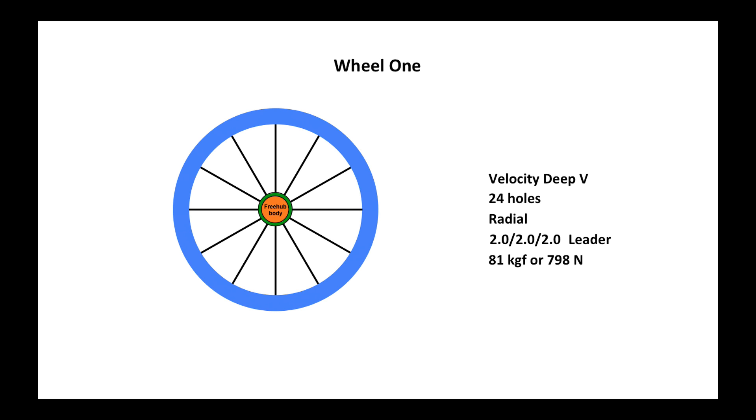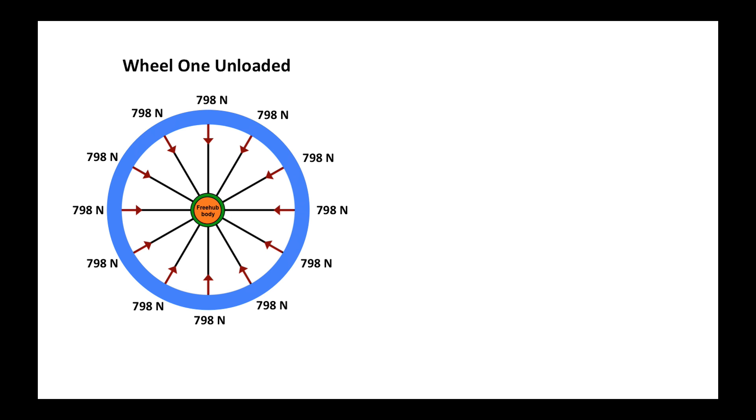2 millimeter straight gauge, Velocity Leader spokes, and a starting tension of 81 kilograms of force, or 798 newtons. I carefully balanced out my unloaded wheel so that every spoke has exactly 798 newtons.